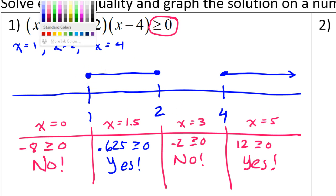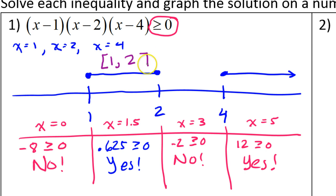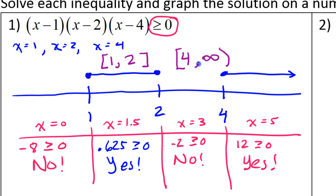We also need to write an interval, similar to how we do domain or increasing/decreasing intervals — we need interval notation. Look at this first little segment: it goes from 1 to 2, so I put [1, 2] with square brackets because they are closed circles — the endpoints are included. For the arrow representing the ray, I put 4 to infinity: 4 gets a closed bracket and infinity always gets a round parenthesis. When I have more than one interval, I put a U — union — in between to connect them. So that's the entire problem. Problem number one is done.